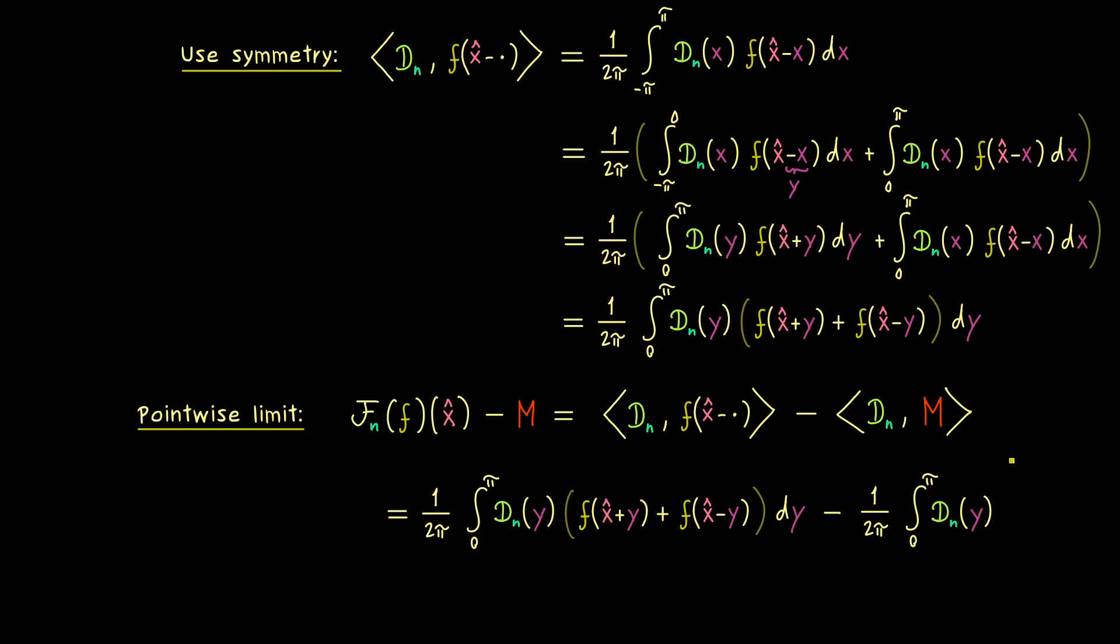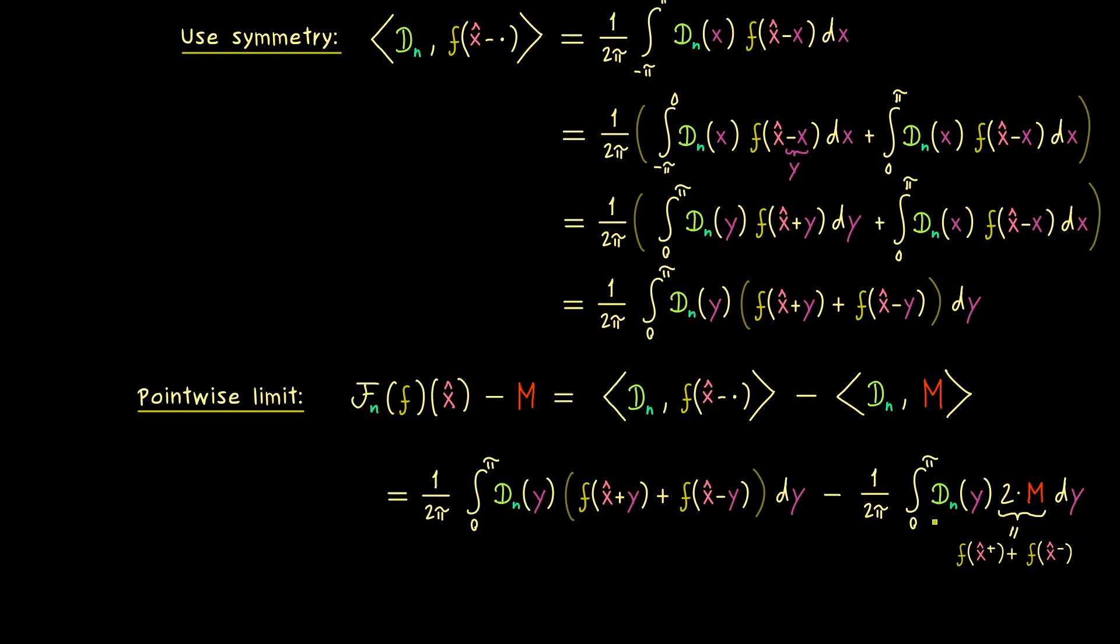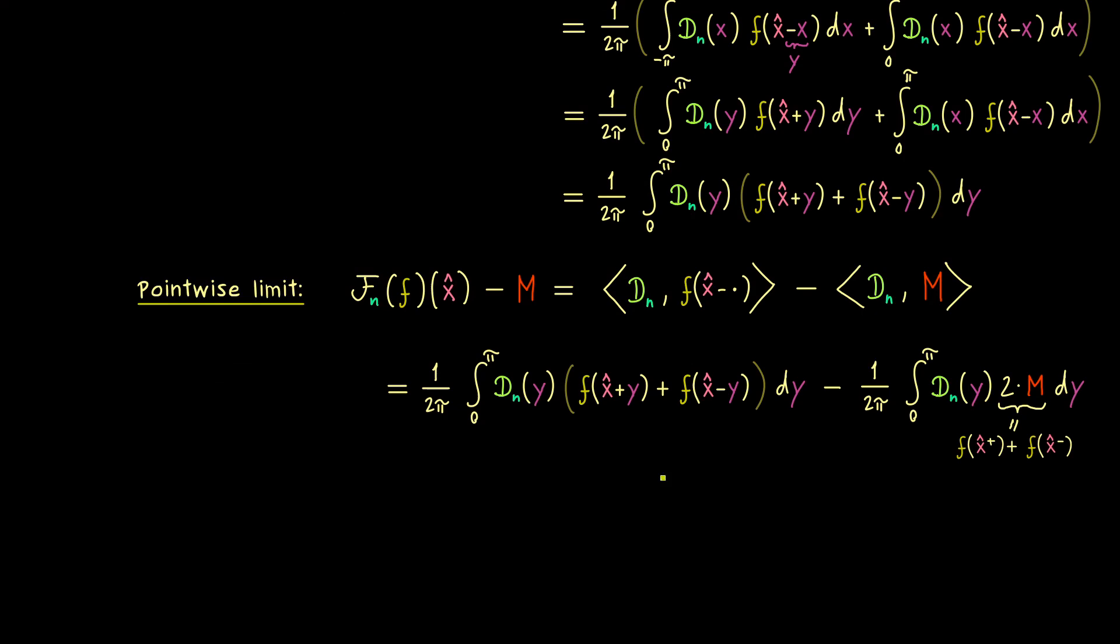And now we know the first one is given by an integral and the second one as well. However obviously the second integral is much simpler because for a constant function both parts here are exactly the same. In other words we can just write 2 times M. And of course there we can use the definition of M which was given as the sum of the limits of f at x hat. So we just have f of x hat plus and f of x hat minus. And then obviously in the next step we want to write everything in just one integral.